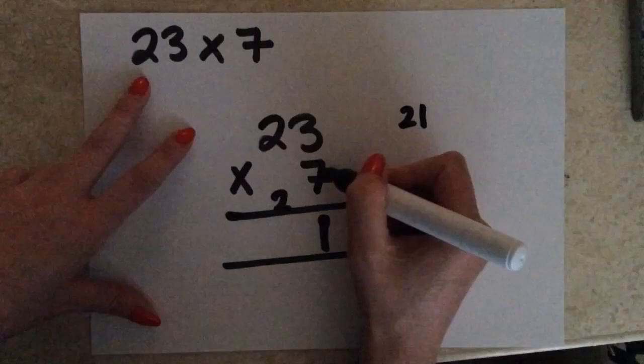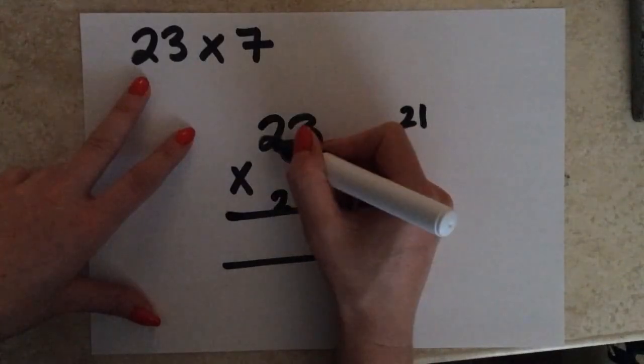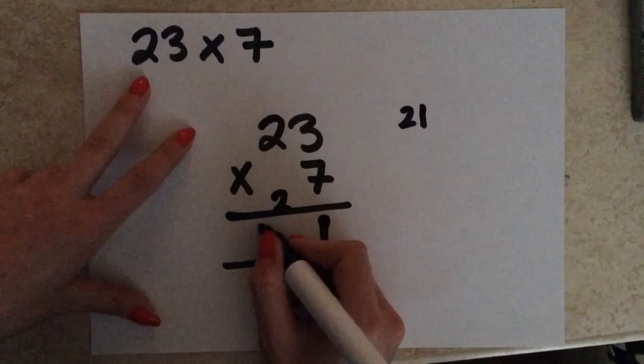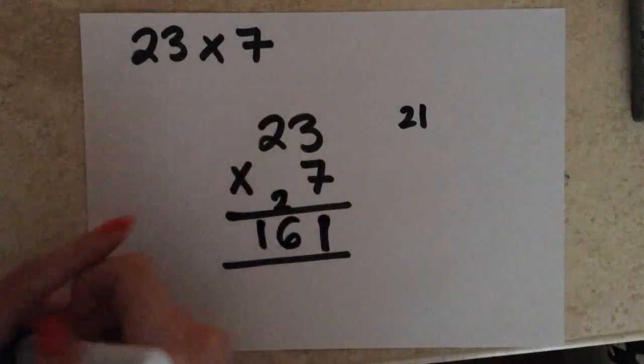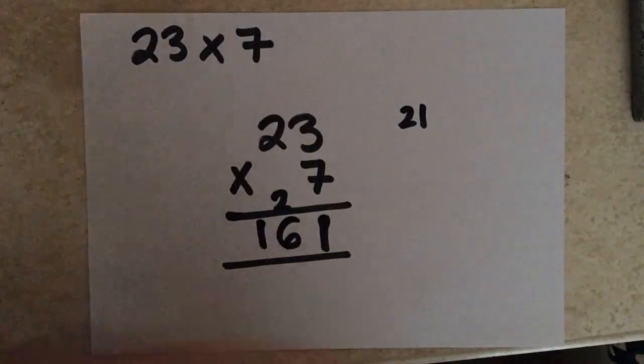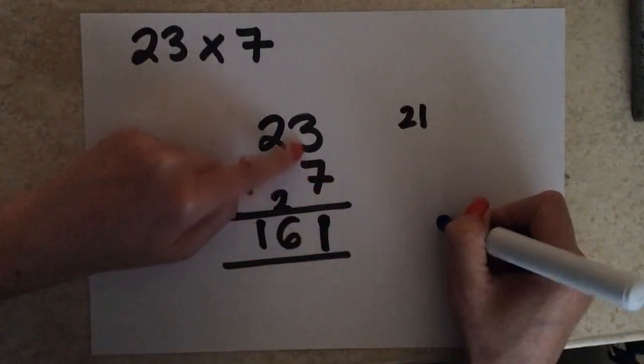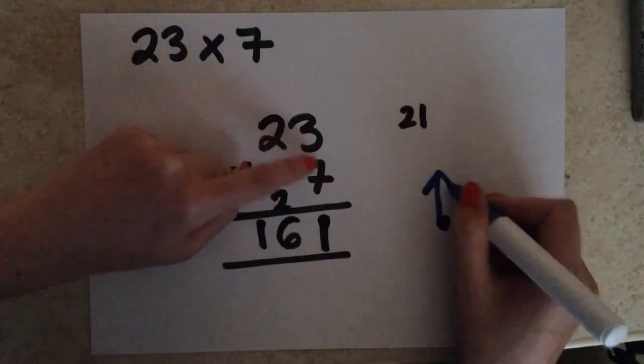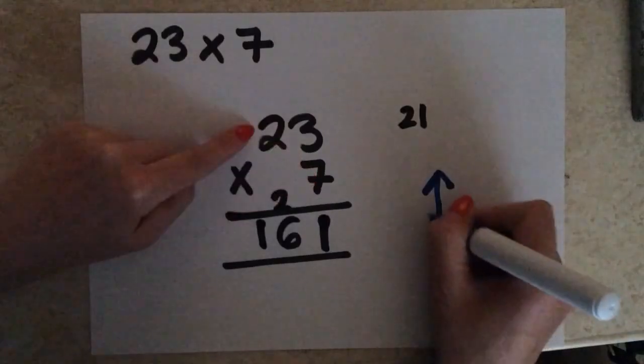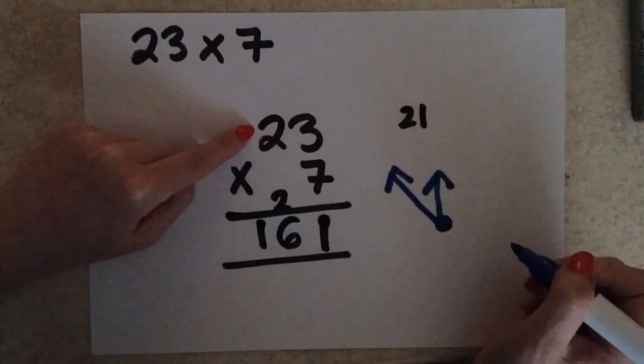Okay, then I'm going to multiply 7 by 2, which is 14, add on the 2, which is 16. So it's 161. So, just to go over that, we multiply this number by the top number first, and then this number by the number next to it.